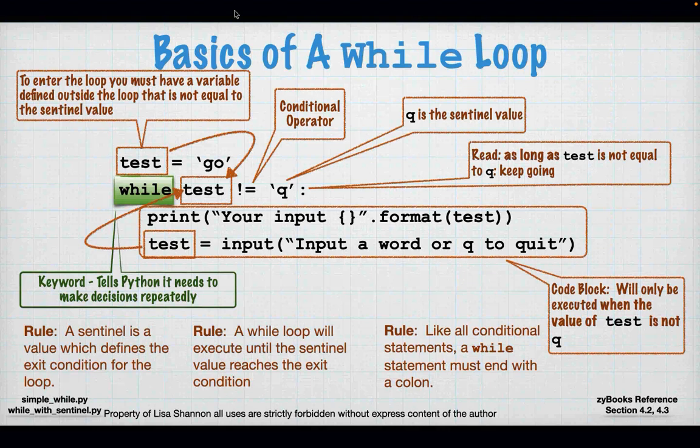A few things to remember: the sentinel value defines the exit condition of this loop. Here I have 'test is not equal to Q', but I could have another condition, like 'test is equal to the word quit'. The relational and Boolean operators we learned last week can all be used in a while loop. You can make complex decisions in a loop just like in a branch. This while loop will execute until the sentinel value reaches the exit condition.